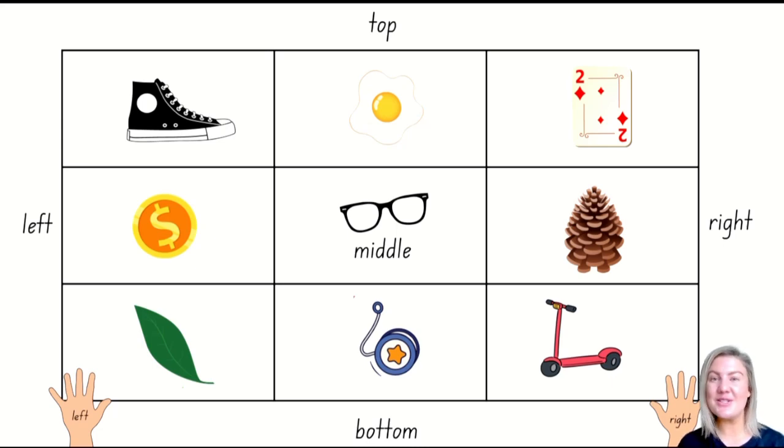I have the words top, middle, and bottom on my screen. I have the words left and right, but I also have top, middle, and bottom. Those three words can also help us talk about the position of an object, especially in a grid that looks like this.